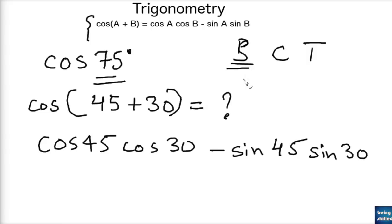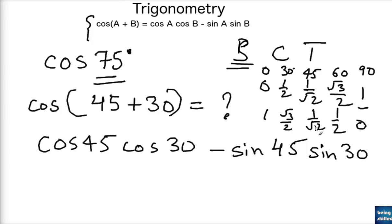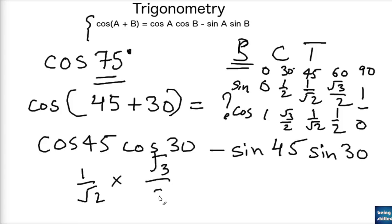Let's recall the trig table. For sine: the values at 0, 30, 45, 60, and 90 degrees are 0, 1/2, 1/√2, √3/2, and 1. Reading backwards gives the cosine values: 1, √3/2, 1/√2, 1/2, and 0. So cos 45 is 1/√2 and cos 30 is √3/2.